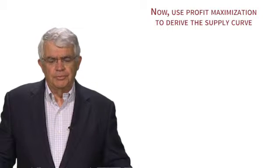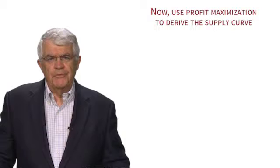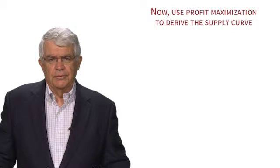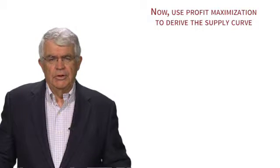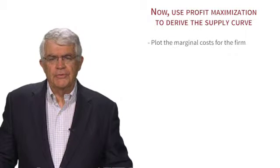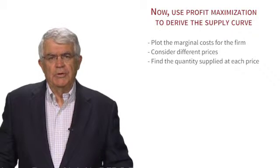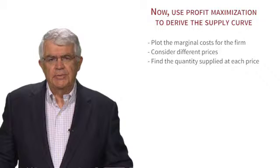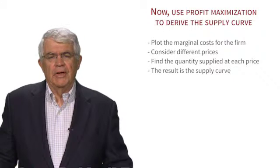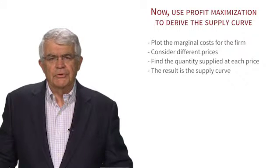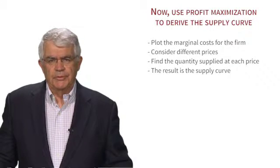Given all this, let's use profit maximization to derive the supply curve. We'll go through a series of steps: first, plot the marginal cost for the firm; then imagine the firm considers different prices; then find the quantity supplied at each price; and the result will be the supply curve.